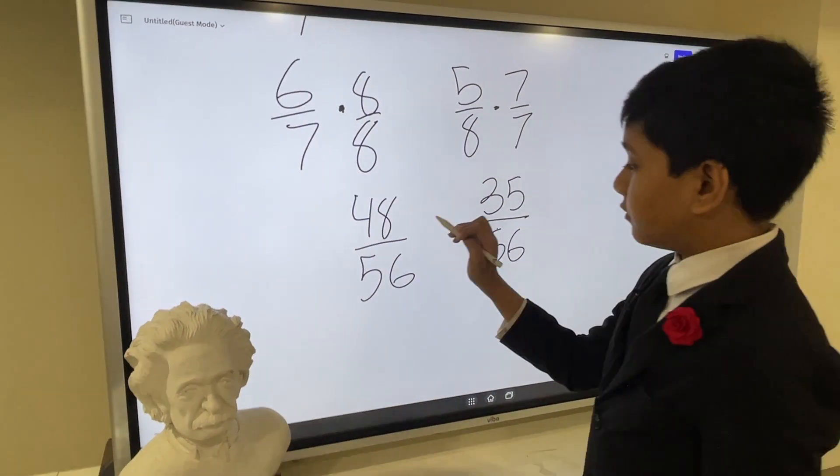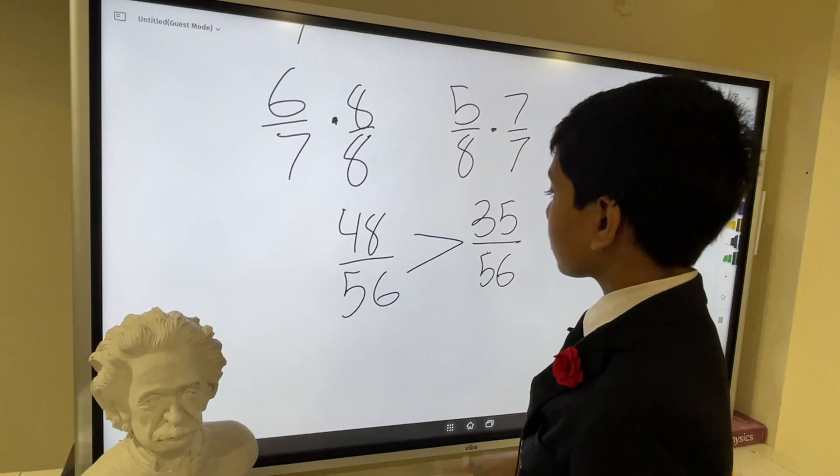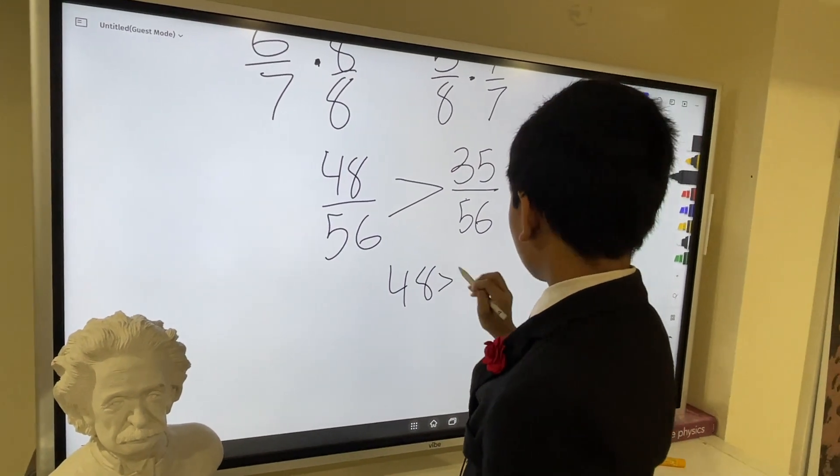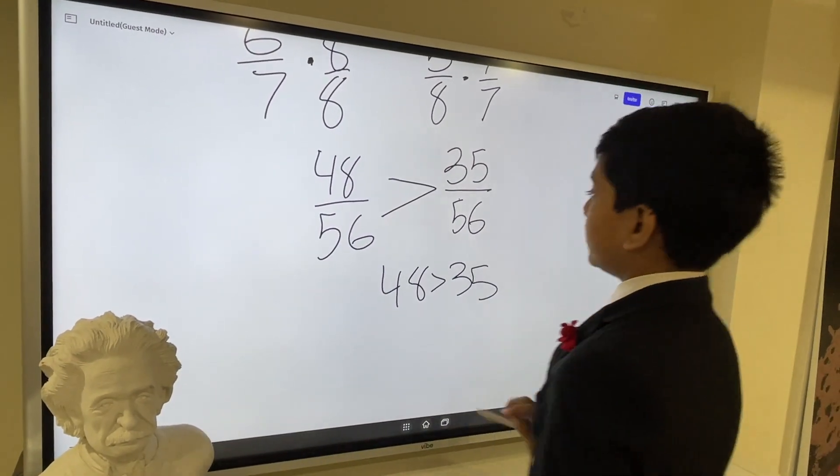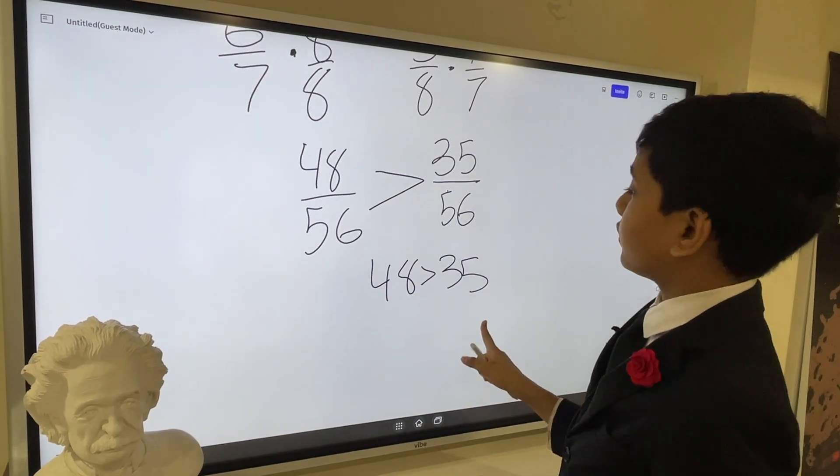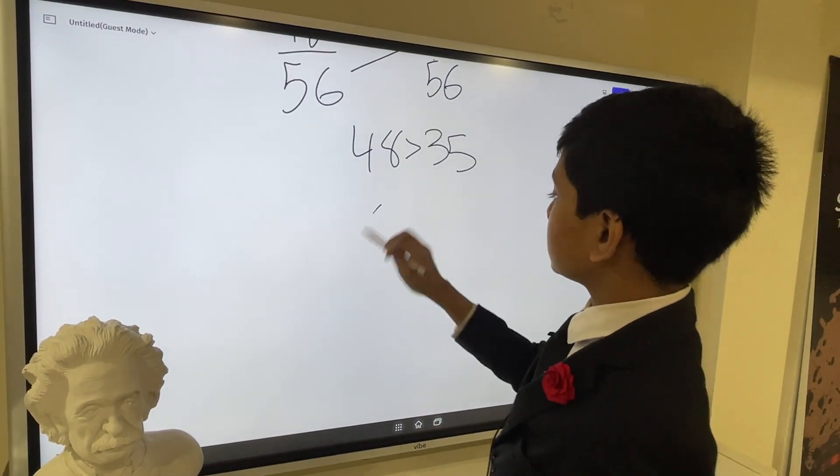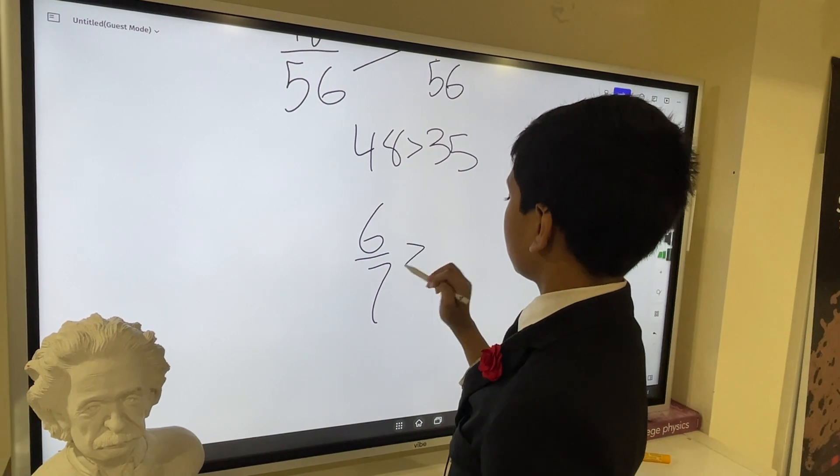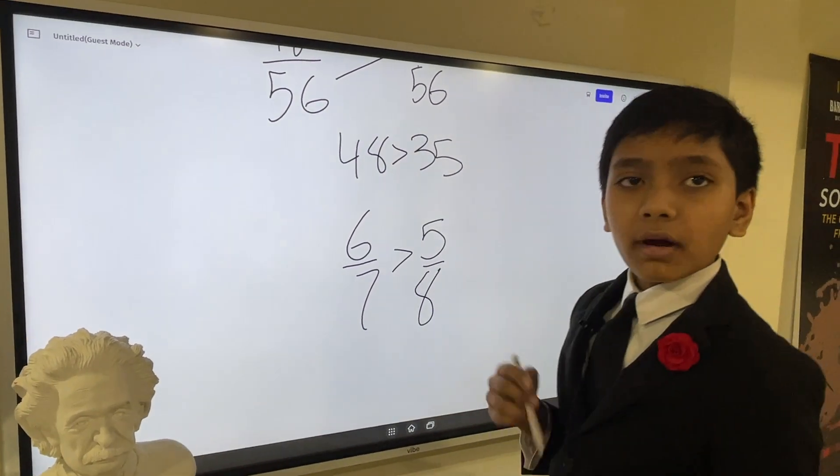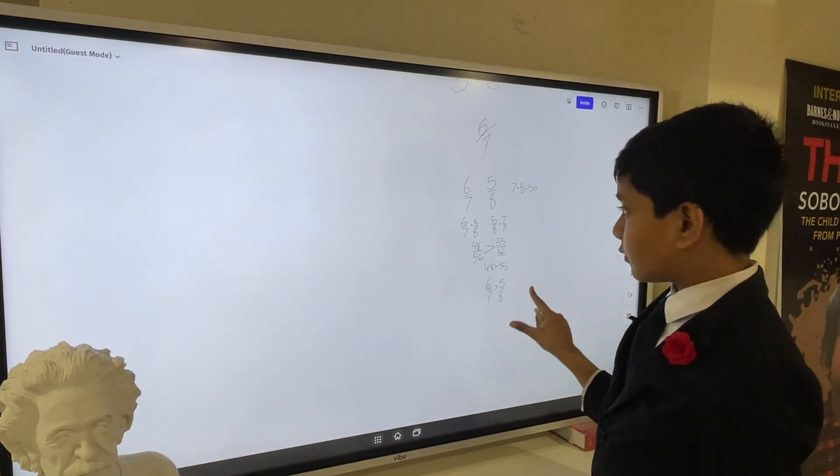Now they have common denominators, and we can very easily compare them to each other. Since 48 is greater than 35, 48 over 56 is greater than 35 over 56. In other words, six over seven is greater than five over eight. All right, so that's it for today.